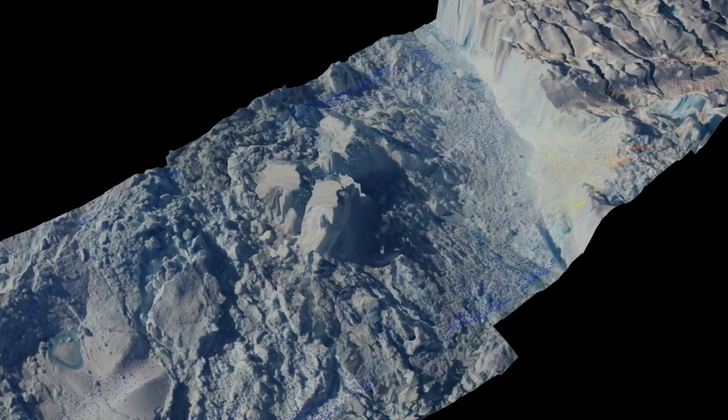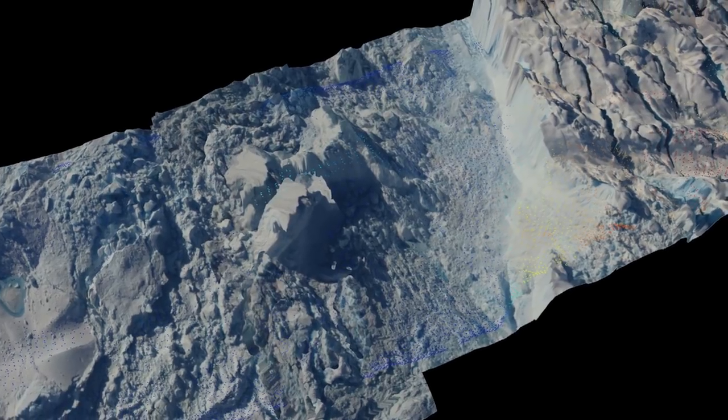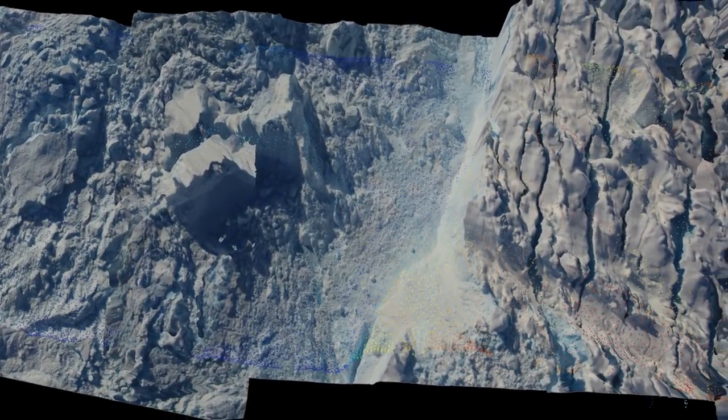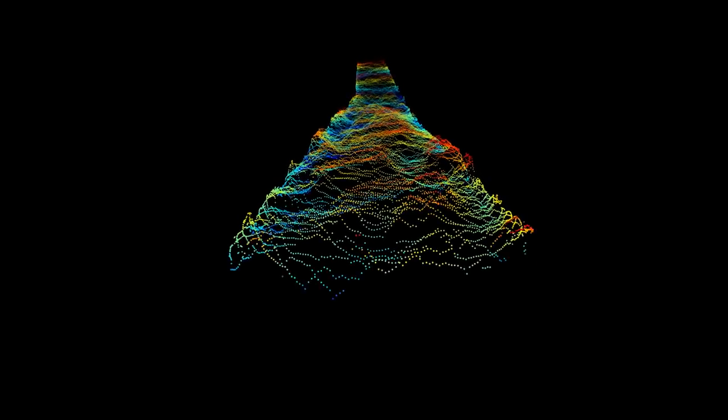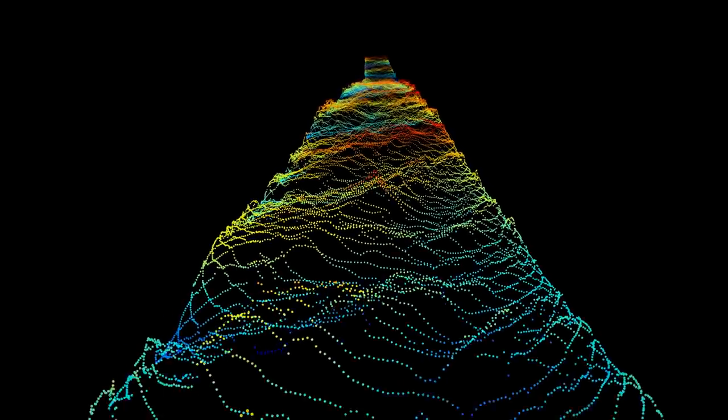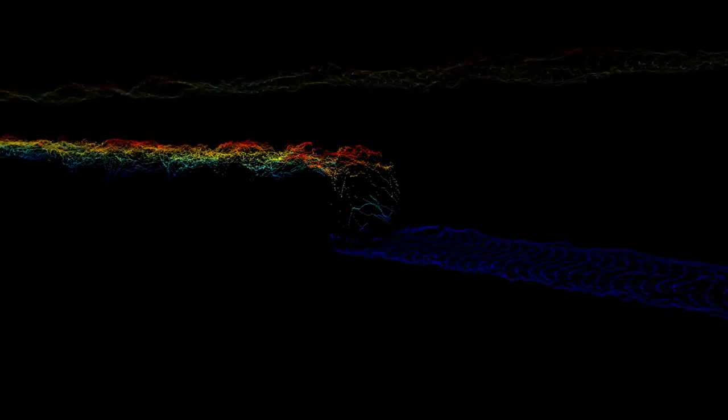NASA's airborne surveys are giving scientists astonishingly accurate views of how Greenland's glaciers are changing. Laser altimeters map the very details of glacier surfaces, and flights spanning two decades reveal the dramatic changes that have taken place.